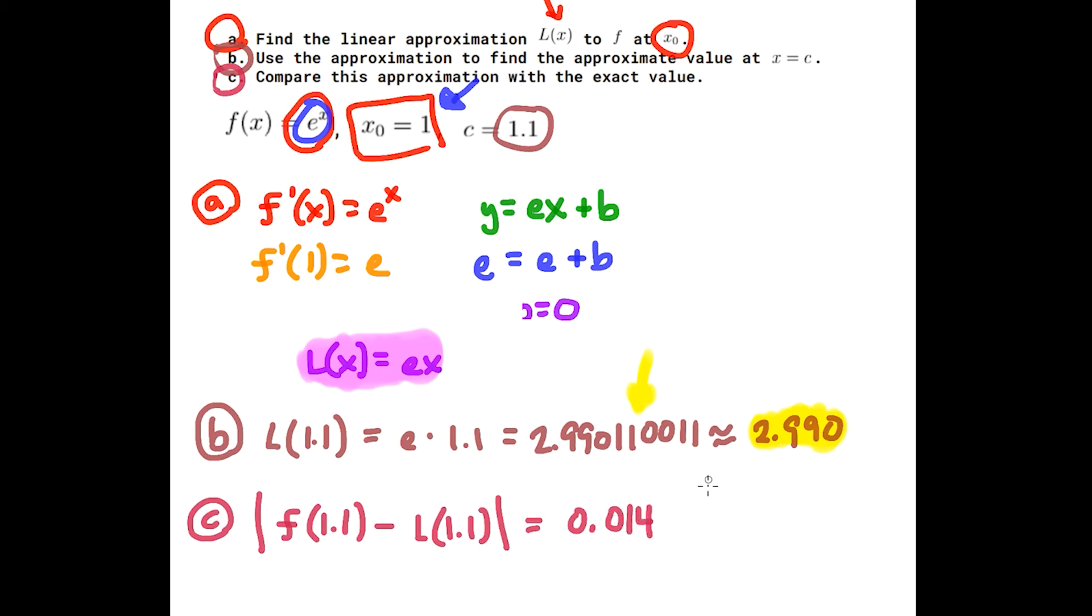And this would be an underestimate since f(1.1) is 3.004166024. So that's a linear approximation problem. If you have any questions about anything in this video let me know.